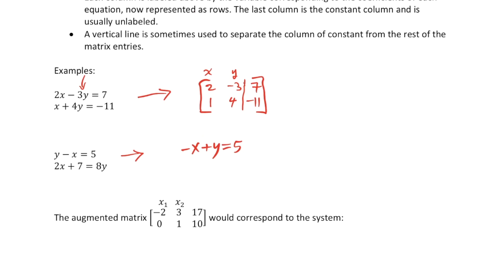In the second equation that is, I'll have 2x minus 8y equals negative 7. So now it's written properly.